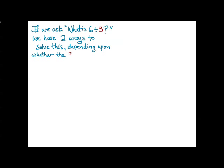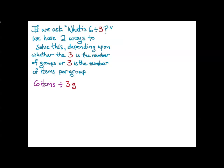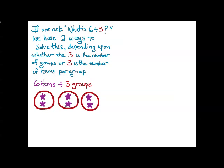Now let's look at this in a slightly different way. If we ask the question, what is 6 divided by 3? We have really 2 different ways to solve this depending upon whether the 3 is the number of groups or sets, or 3 is the number of items per group. In the first case, if we take 6 items and divide by 3 groups, we draw out our 3 groups and we deal those 6 items amongst the 3 groups until they're all dealt out. And then we see that there are 2 items in each group. So 6 divided by 3 is equal to 2 items per group.